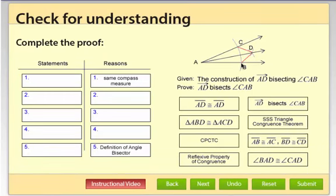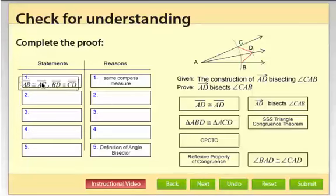And the same could be said for segment BD and CD. Those use a compass and have the same measure. So we can say those segments are congruent. Segment AB is congruent to segment AC. Segment BD congruent to segment CD.